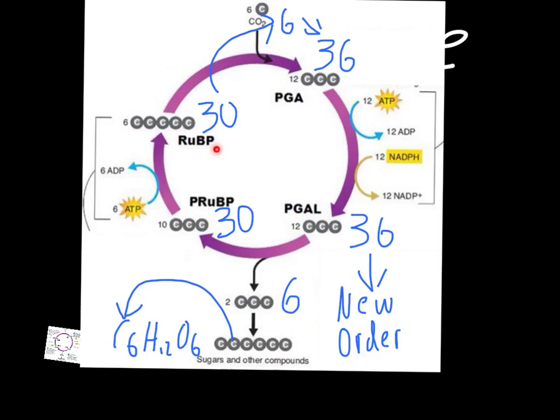This cycle really requires two inputs: it requires carbon dioxide from the air around the plant, and it requires energy from the light-dependent reactions in the form of ATP and NADPH. Hopefully this made it a little bit easier when we broke it down into thinking about total numbers of carbons instead of thinking about it in terms of six groups of five the way the book describes it. In the last part, we'll just recap some of the major things.